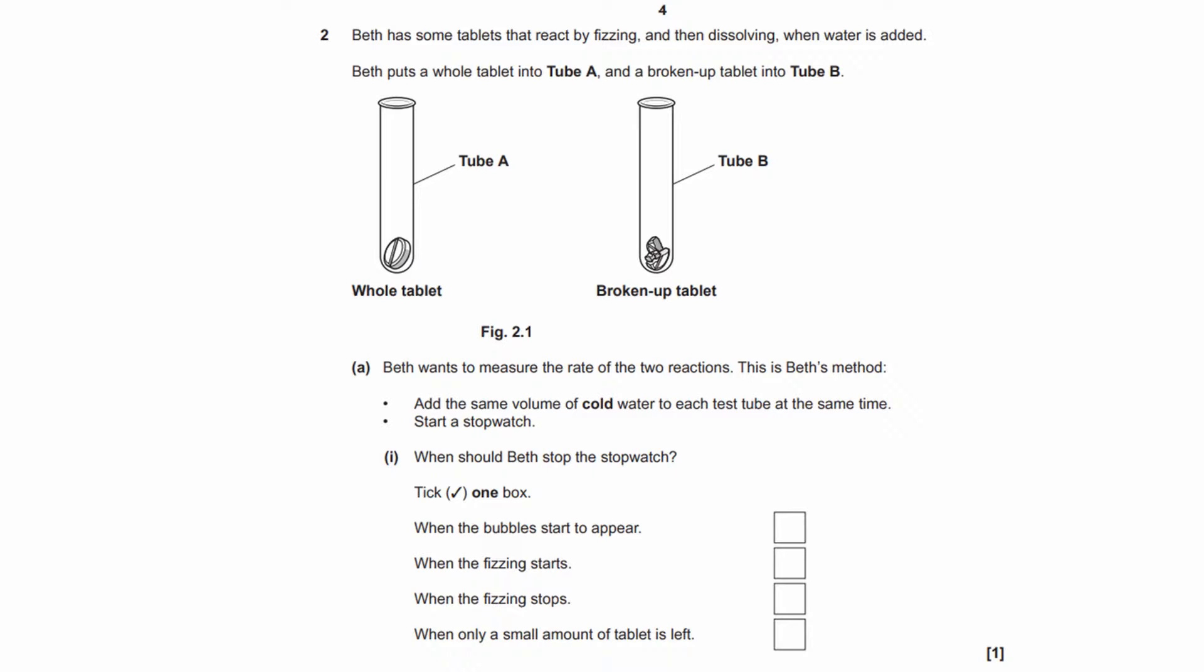So Beth has some tablets that react by fizzing, and then dissolving when water is added. Beth puts a whole tablet into tube A, and a broken-up tablet into tube B. Beth wants to measure the rate of the two reactions. This is Beth's method. Add the same volume of cold water to each test tube at the same time. Start a stopwatch. When should Beth stop the stopwatch? Tick one box. When the bubbles start to appear, when the fizzing starts, when the fizzing stops, when only a small amount of tablet is left.